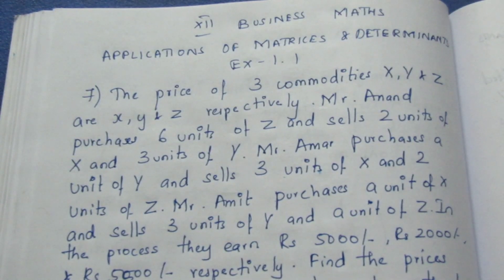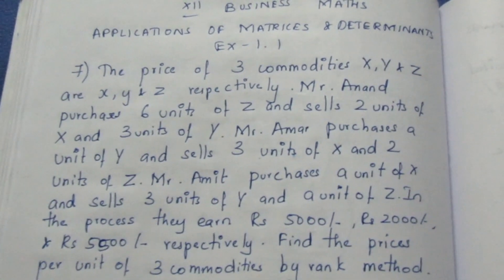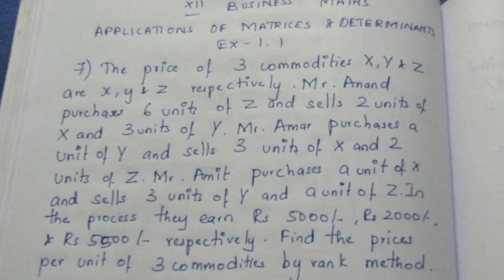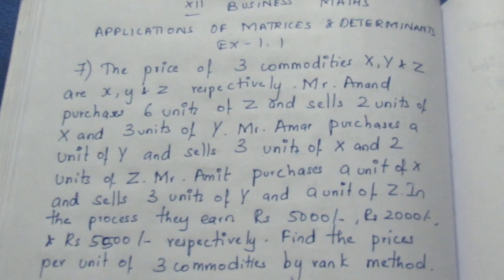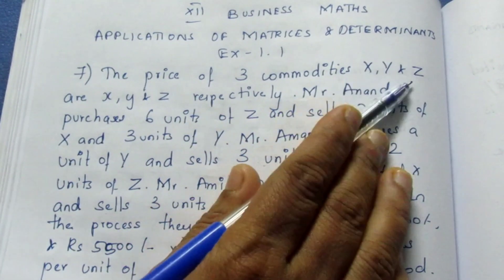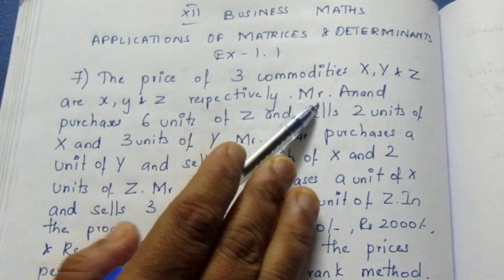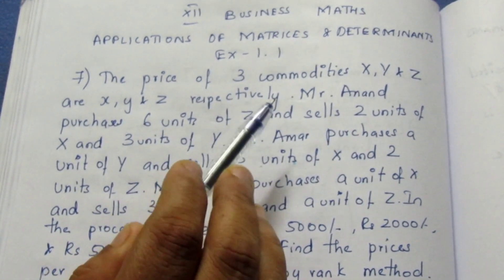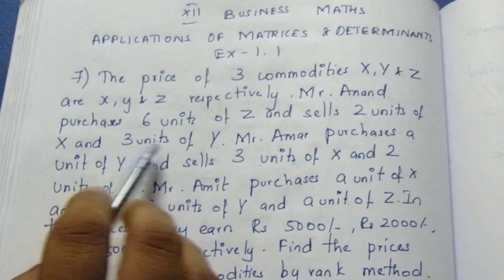Hello viewers, I am Aitli. This is Class 12 Business Maths, Applications of Matrices and Determinants. In this video we will work on a question. The price of 3 commodities X, Y, Z are X, Y, Z respectively. Mr. Anand purchases 6 units of Z and sells 2 units of X and 3 units of Y.